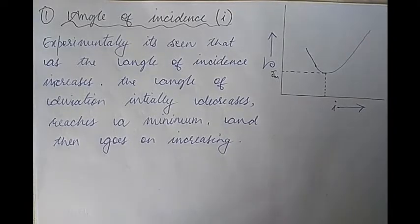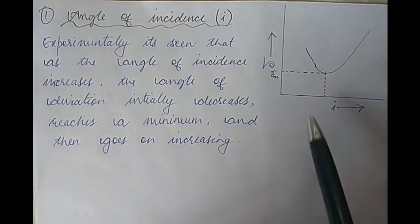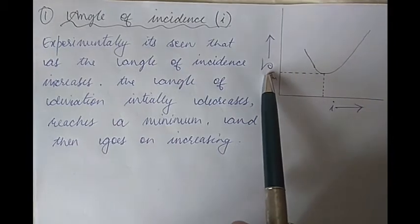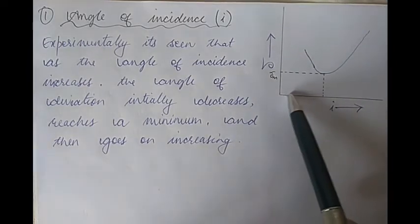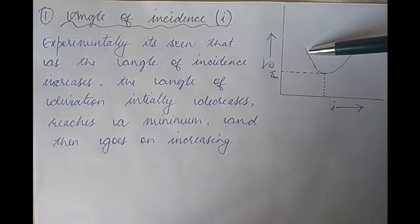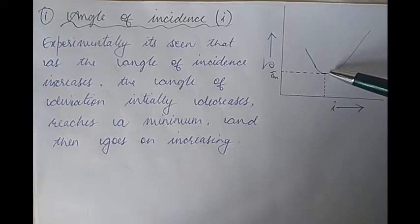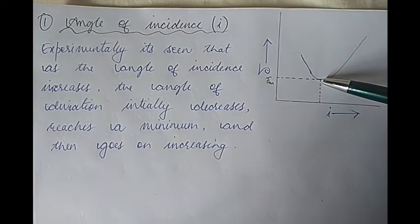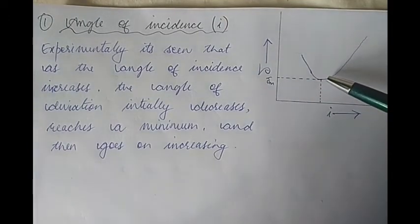Finally, let us look at how the angle of deviation depends on the angle of incidence. To understand this, we take the help of a graph, wherein the angle of incidence is plotted along the x-axis and the angle of deviation delta is plotted along the y-axis. Experimentally, what is seen is that as the angle of incidence increases, the angle of deviation initially goes on decreasing until it reaches a minimum, after which, on further increasing the angle of incidence, the angle of deviation goes on increasing. This minimum value of the angle of deviation is represented by delta subscript m — delta m — and it is called the angle of minimum deviation.